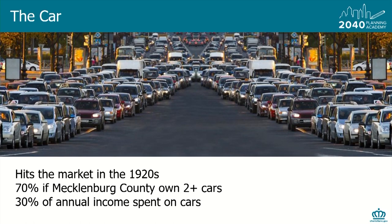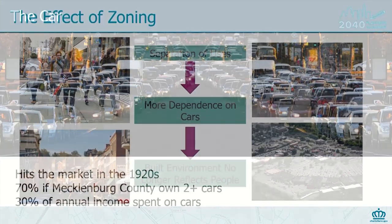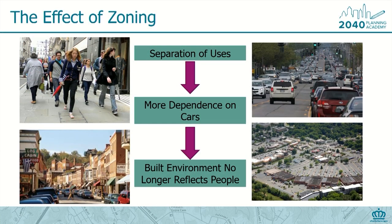Enter the car. The car hit the market at the same time as zoning became common, allowing the separation of uses to proliferate. Fast forward 100 years later, and now 70% of residents in Mecklenburg County have more than two cars, and 30% of the average person's annual income is spent on cars. The result: hours every week sitting in traffic instead of using that time on activities that bring us health and happiness. With the separation of uses comes more dependency on cars, and then the places you spend your time reflect your car — and not you.